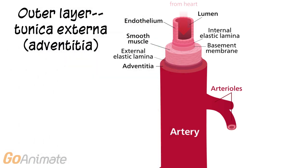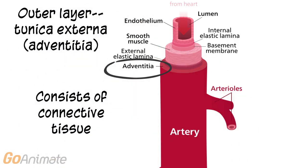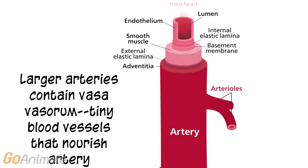Let's examine the structure of arteries first. The outer layer is called the tunica externa or adventitia. It consists of connective tissue. Some of the larger arteries also contain the vasa vasorum, which is a tiny network of blood vessels that supply the artery.